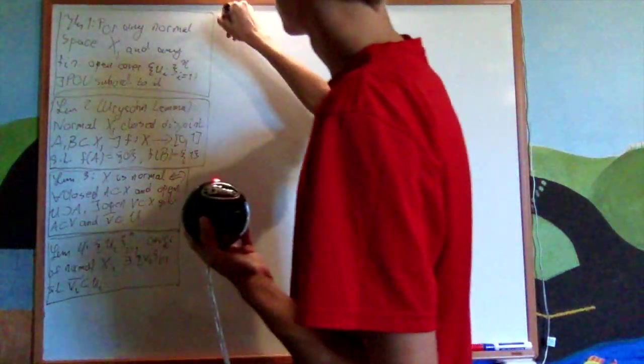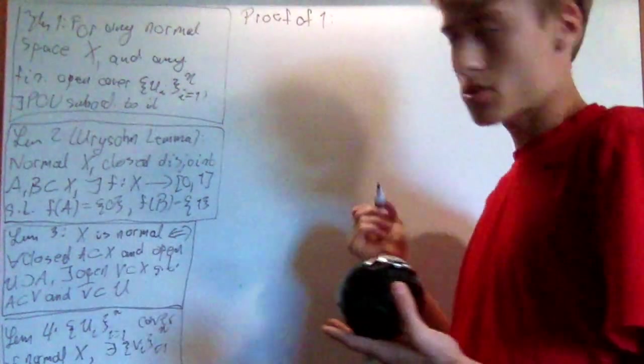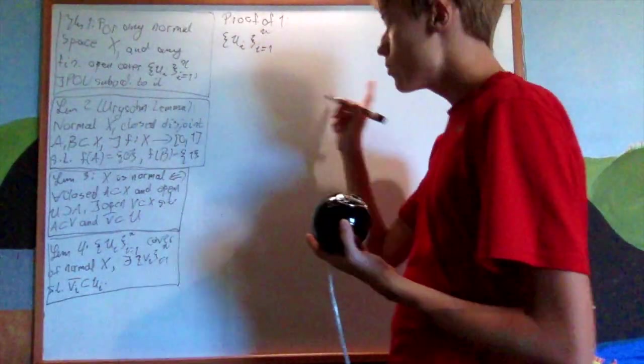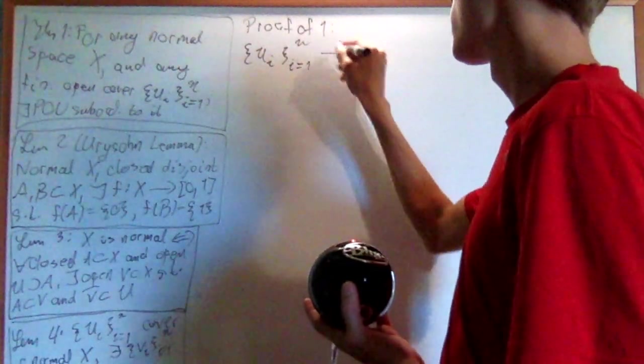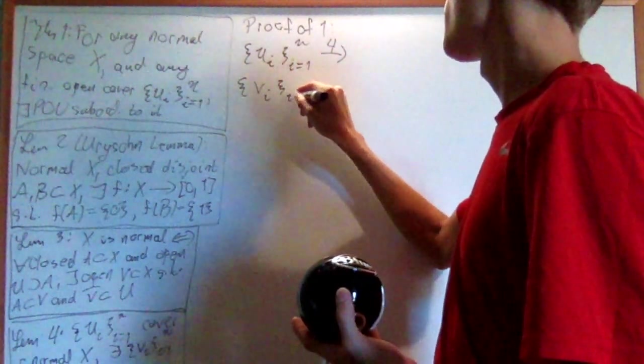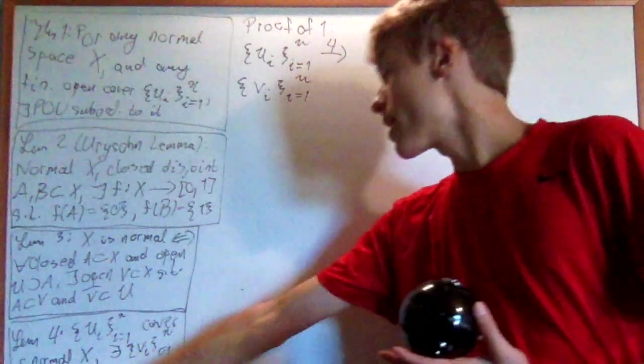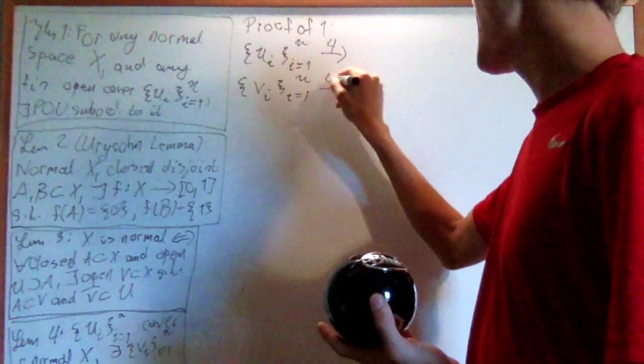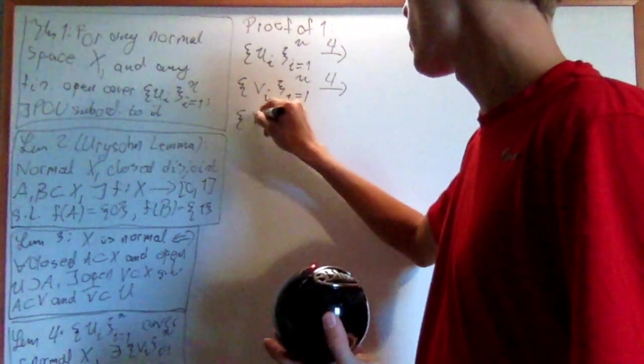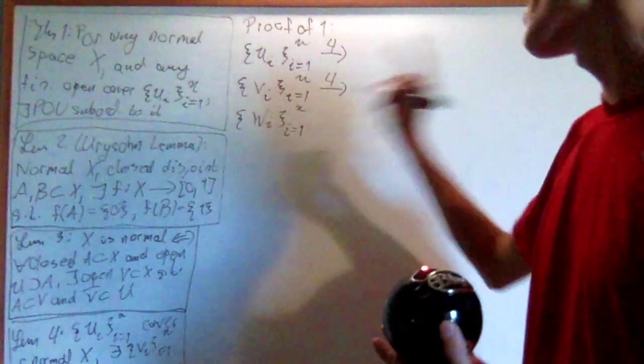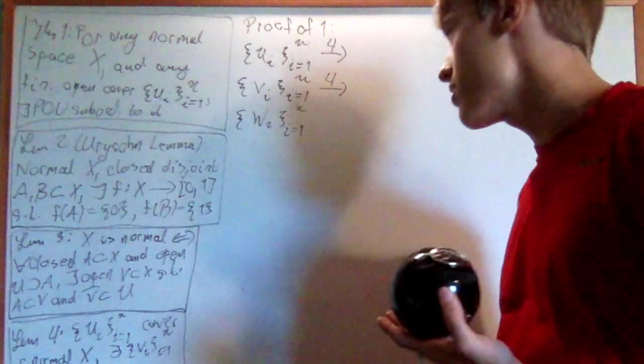And so the proof of theorem one goes like this. Basically, we start off with our finite cover, and then we apply lemma four to create this new cover, v i, from i equals one to n, such that v i bar is a subset of u i. And then we use lemma four again to create a new open cover, w i, from i equals one to n, such that w i bar is a subset of v i.